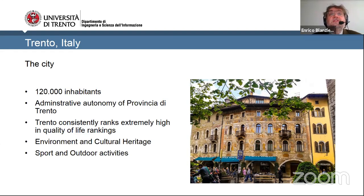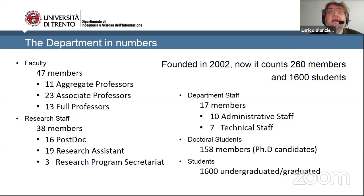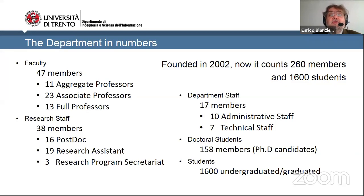The surrounding environment is great for sport and outdoor activities — skiing, hiking, mountaineering, swimming, surfing, and sailing in its lakes. The university itself organizes sporting activities. In terms of department numbers, we currently have 47 faculty with 38 people working in research and 17 in administrative and technical staff. More than 150 PhD candidates are enrolled in our PhD programs, and overall we have 1,600 students in undergraduate and graduate programs.